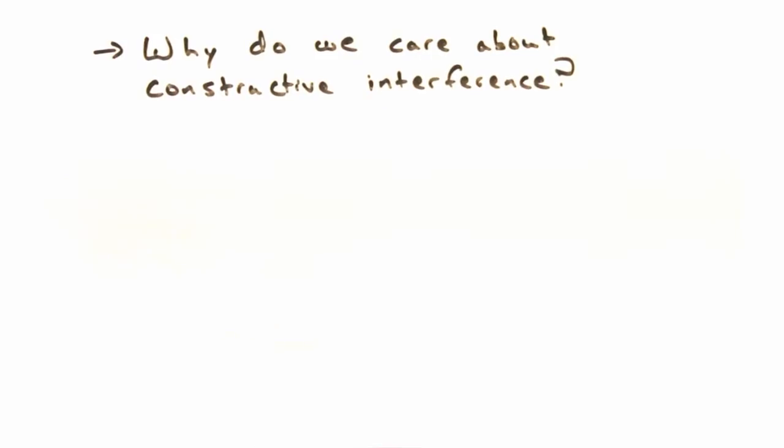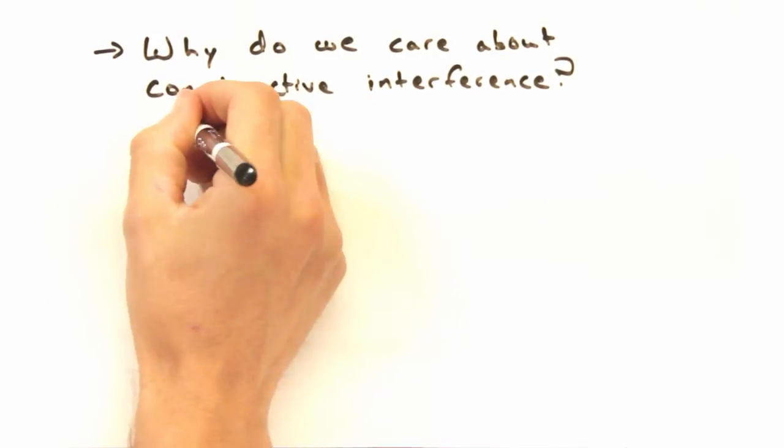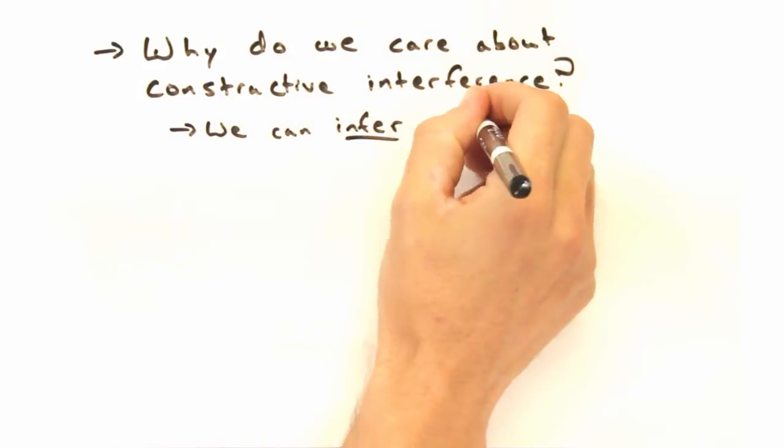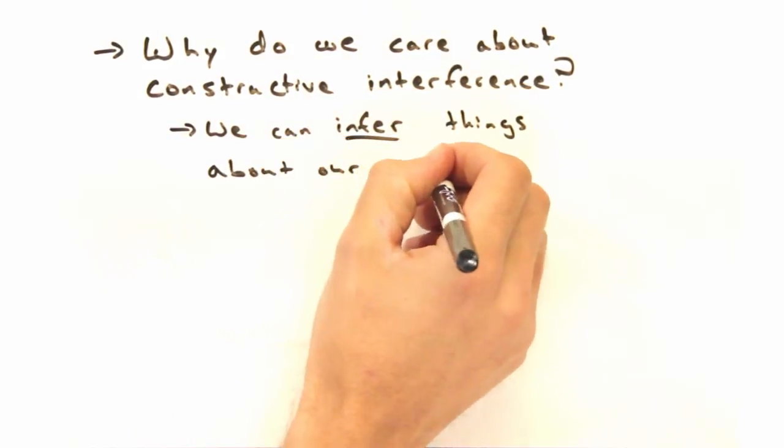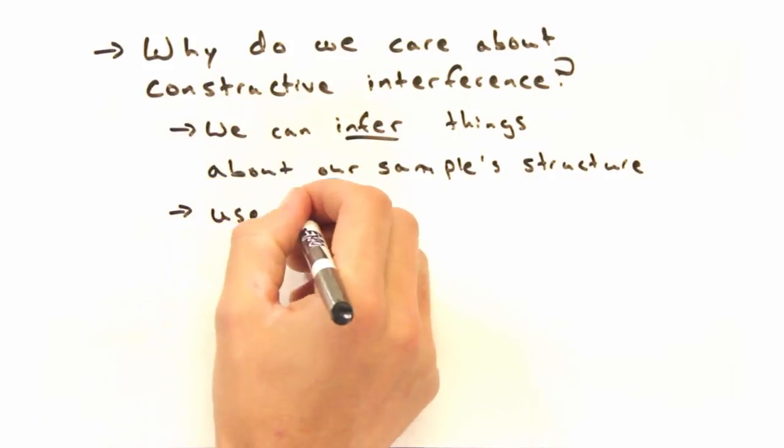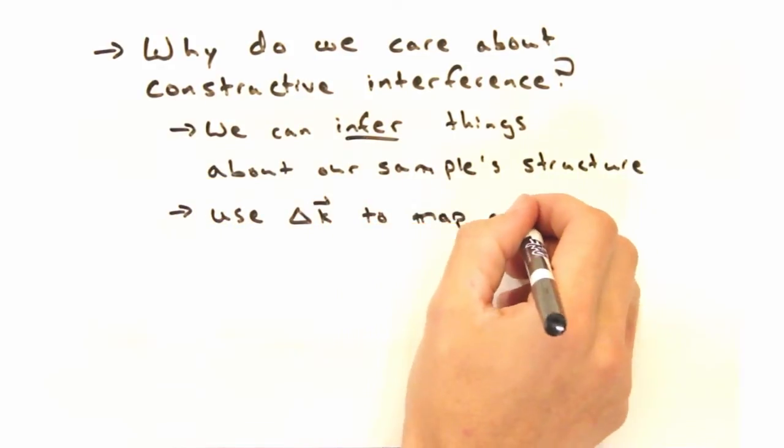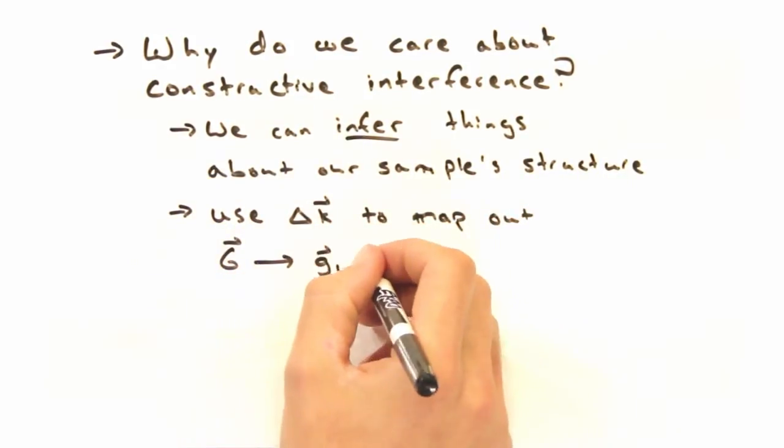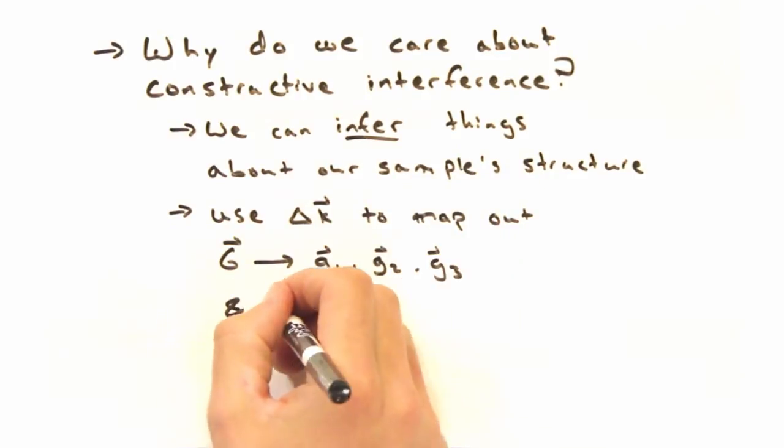Okay, I'm following this, but remind me why I care about constructive interference? Okay, by analyzing what's required to achieve constructive interference, we should be able to infer something about our sample. If I can use delta K to map out G, I can identify the individual G1, G2, and G3. And if you know the reciprocal lattice factors, you know the real space lattice factors too.